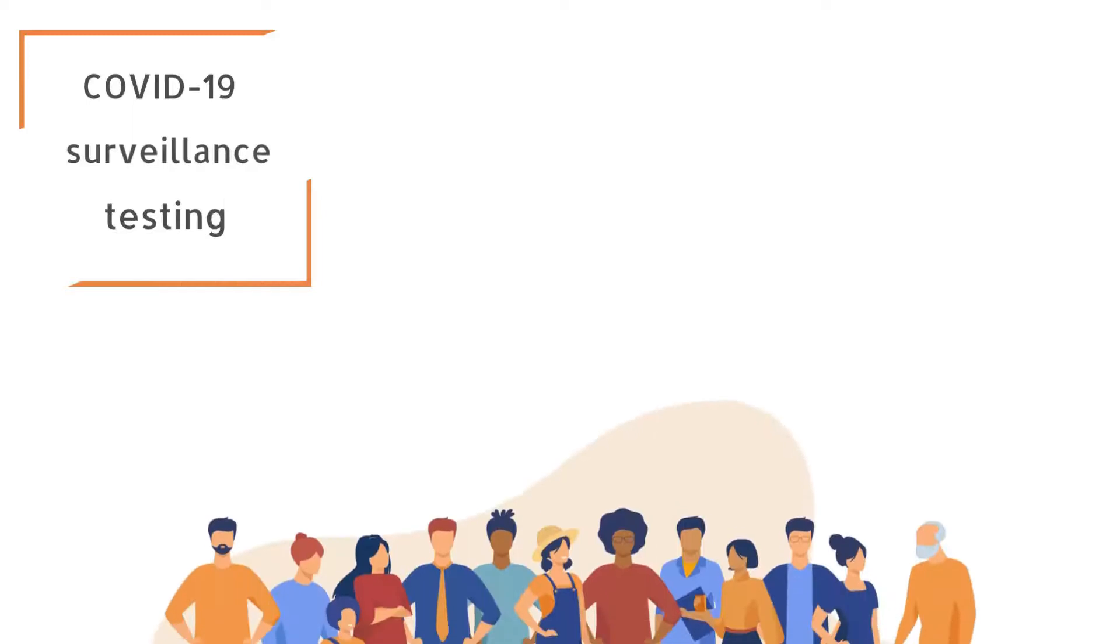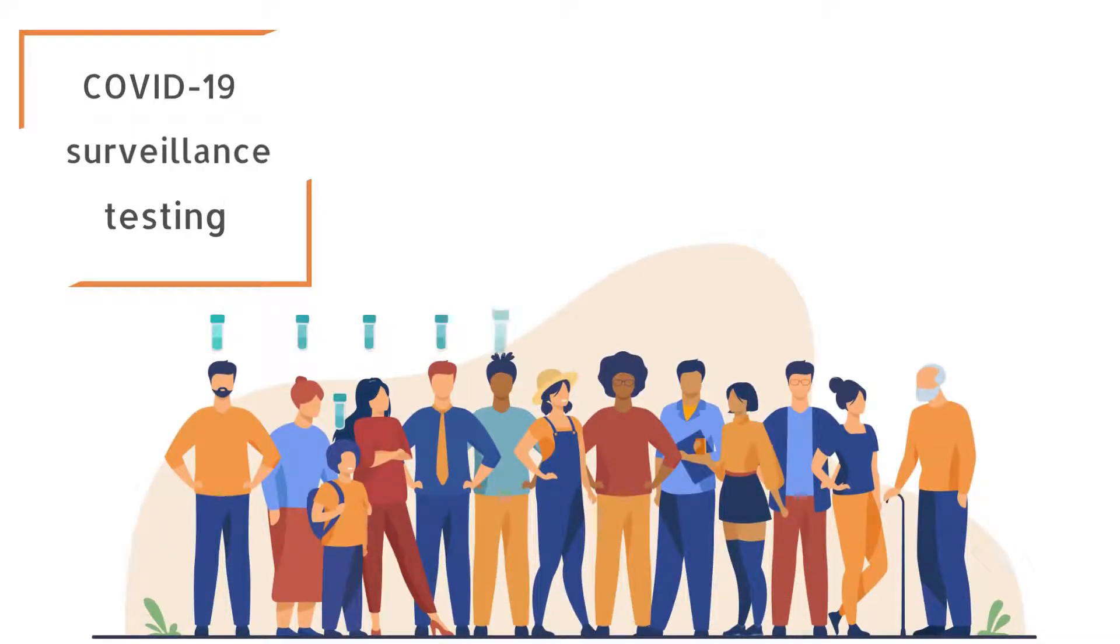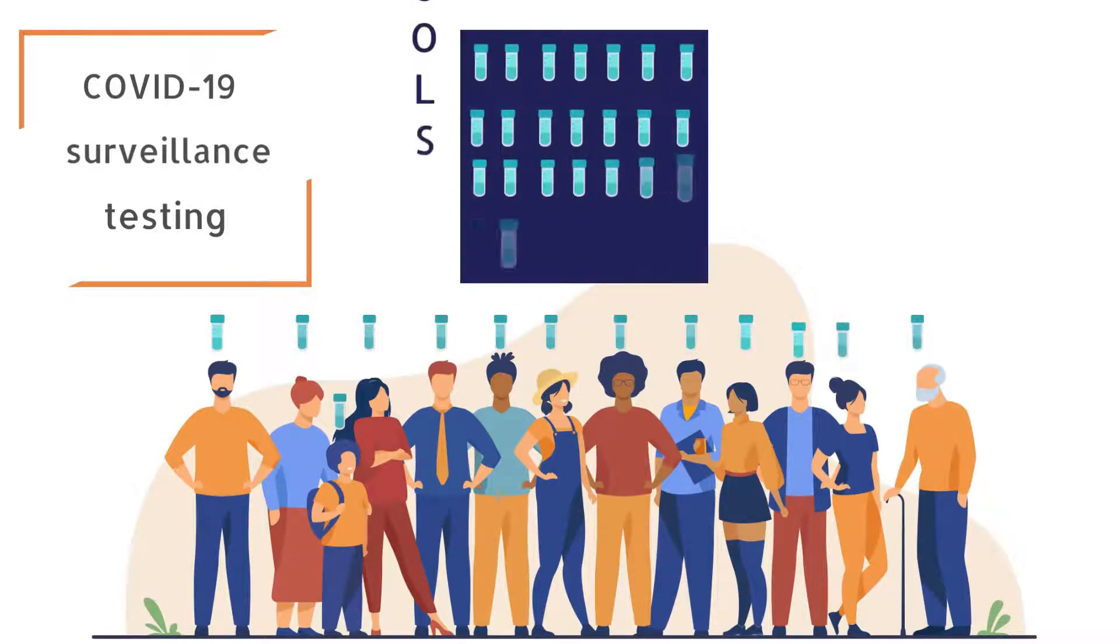One way COVID-19 surveillance testing can be conducted is by collecting specimens from multiple people and testing them together in groups, called pools.